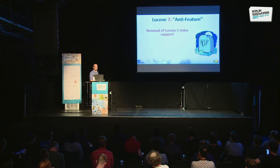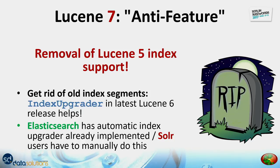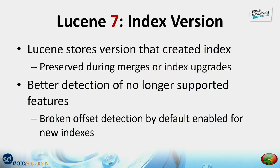For migration: we are removing Lucene 5 index support. If you want to upgrade, you should use the index upgrader in the latest Lucene 6 version. Elasticsearch has an automatic upgrader, but Solr users have to do this manually. If you have legacy numeric fields, the index upgrader will not help — there is no way to avoid re-indexing for that. Lucene 7 also now stores the index version that originally created the index to enable some default values in the index writer and index reader, for example for detecting broken offsets — negative offsets can now be detected earlier.